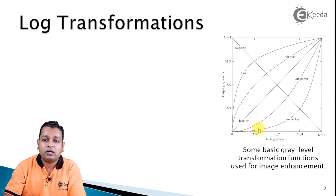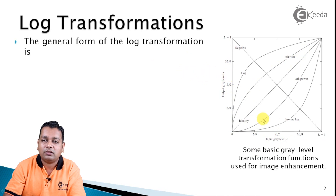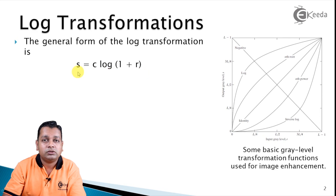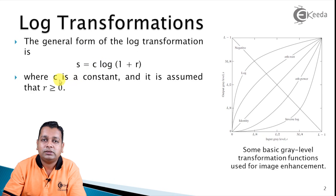The input gray levels and output gray levels are represented by r and s. The general form of the logarithmic transformation is given by the equation: s = c · log(1 + r), where r is the input intensity level, s is the output intensity level, and c is a constant. It is assumed that r is greater than or equal to 0.